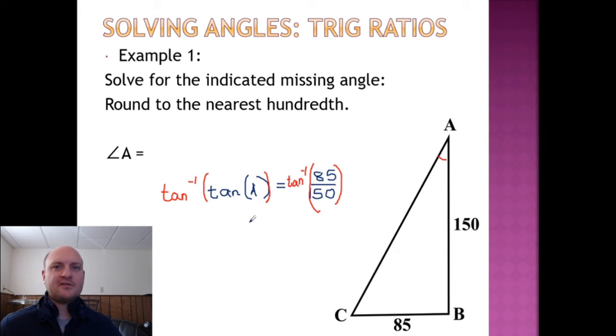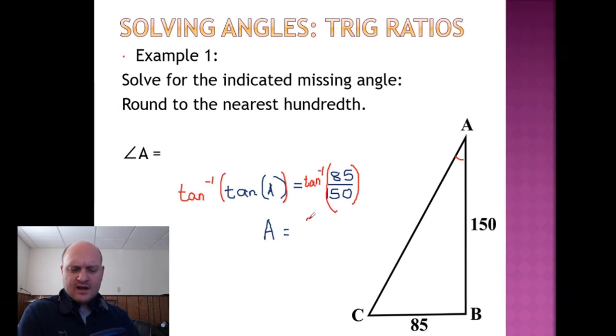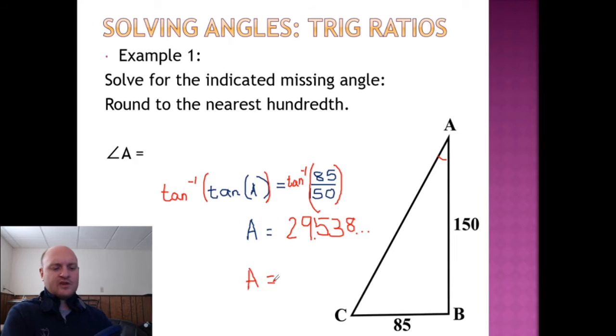Just like square rooting a squared value, our inverse of tangent will tell us what angle A is, and our tangent inverse of 85 over 150 is something we'll keep for an answer. When I put tangent inverse of 85 out of 150 into my calculator, I get 29.538, which I'm going to round to 29.54, which makes our final answer. Note that this works because my calculator is set to degrees.